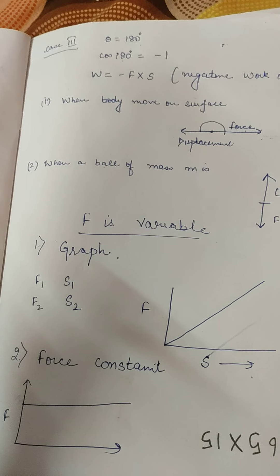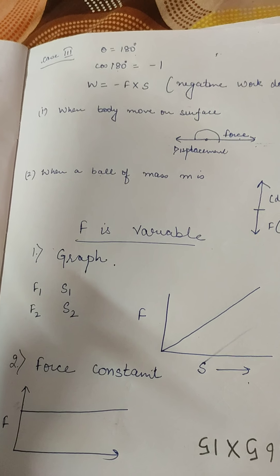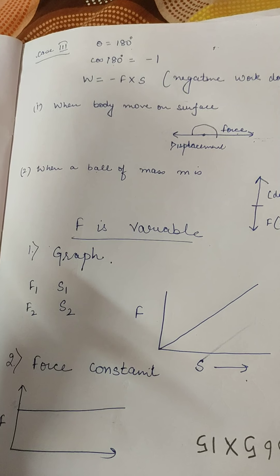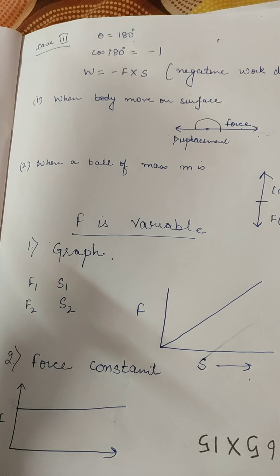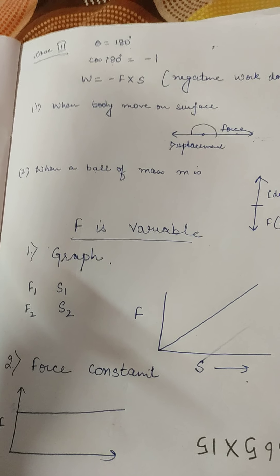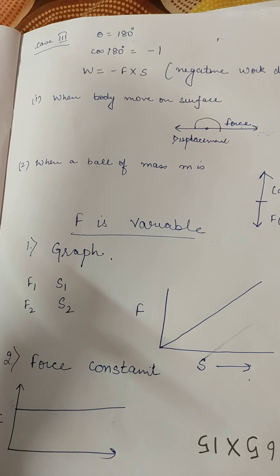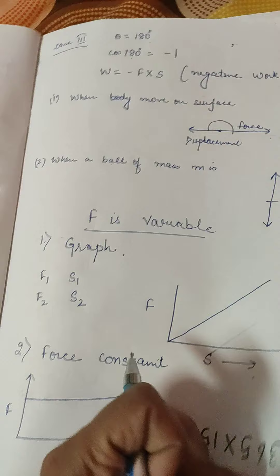The next part is work done by the force of gravity. The force of gravity is the pull towards the earth — that's why every body falls down. If a body is of mass M, the body will come down. We know that F = MA, and here acceleration A is replaced with G because every body is falling downwards, so F = MG.